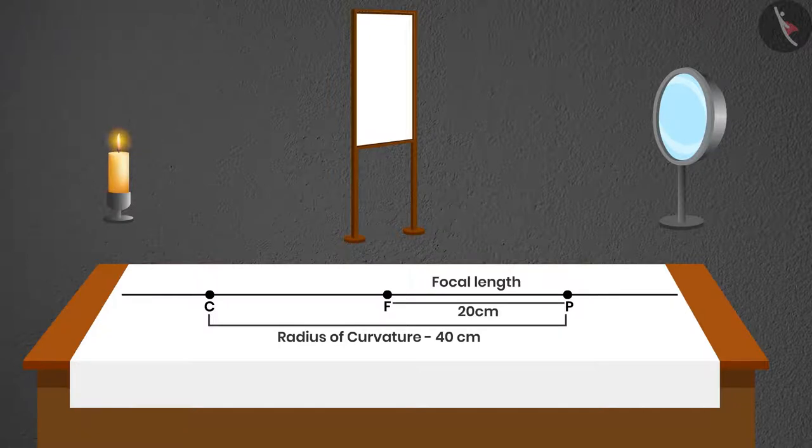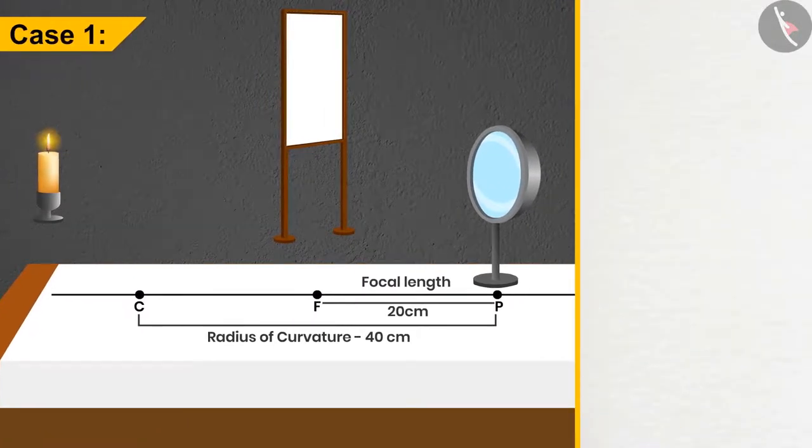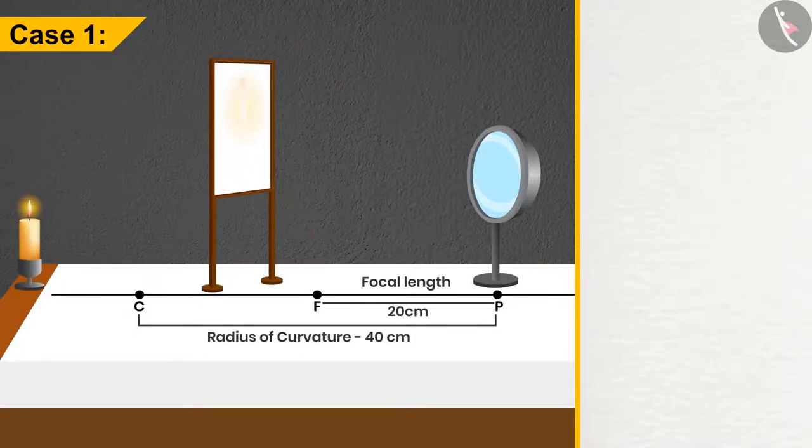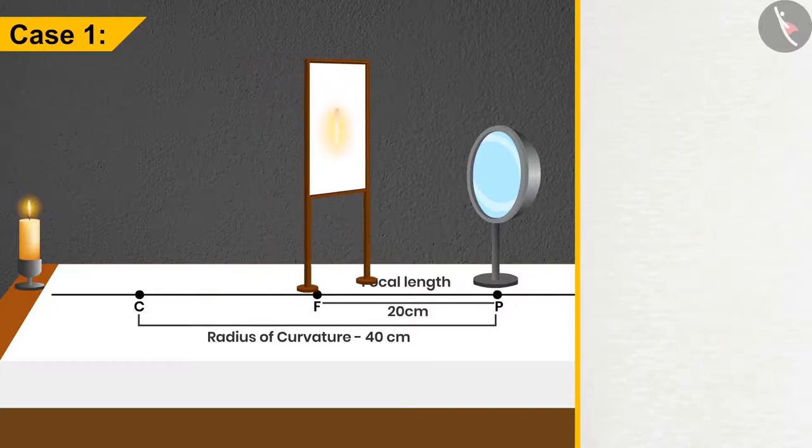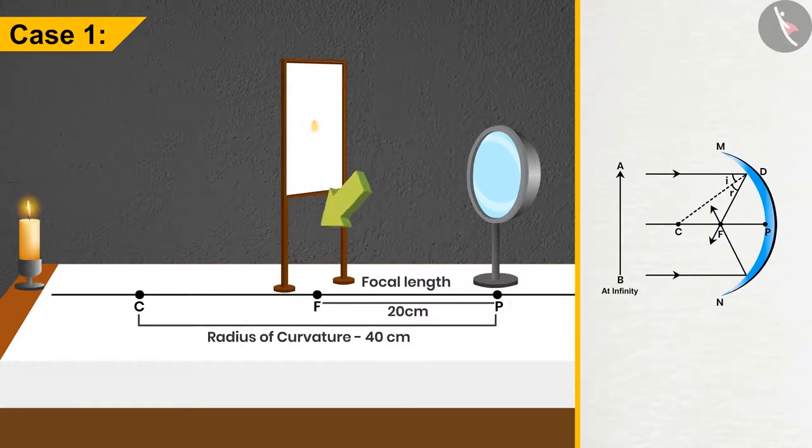I will place the stand on P and the concave mirror on it. Case 1: If the candle is placed far away, say at infinity, and the screen somewhere in the middle of the candle and the mirror. The screen should be moved back and forth until a sharp image is formed on the screen. I get this point only when I put the screen at the focus. The size of the image is very small, and we can see the image on the screen, so it is real.